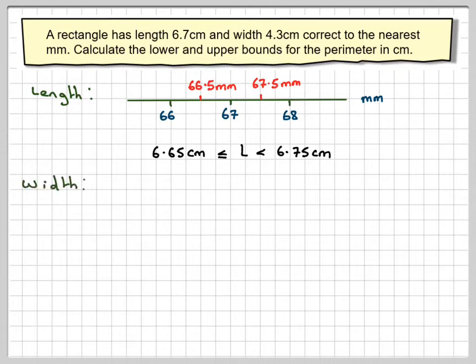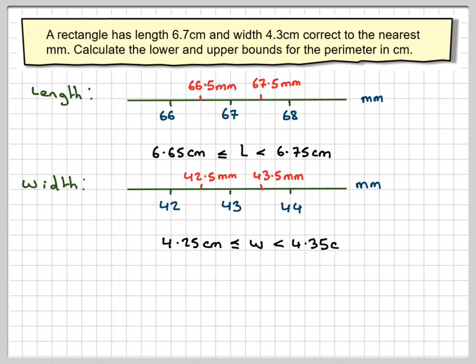Doing the same for the width, I'm putting 4.3 on the number line. So it will be 43 millimeters. Then this will be 42 millimeters and then this will be 44. The midpoint here would be 42.5 millimeters and the midpoint here would be 43.5 millimeters. And then the lower and upper bounds in centimeters will be 4.25 and 4.35.